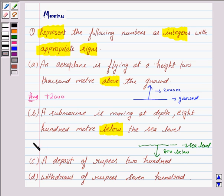the answer is minus 800, because it is moving below the sea level. Now, let us discuss the C part.